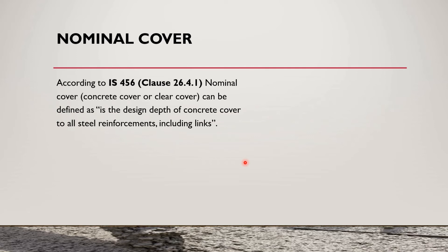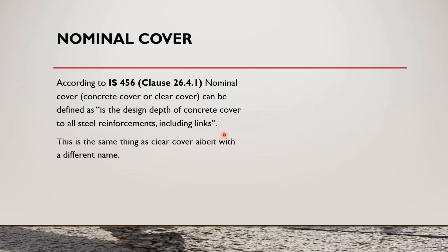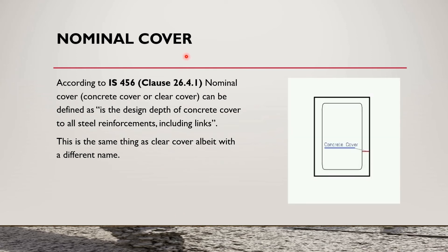Nominal cover. According to IS-456 clause 26.4.1, nominal cover can be defined as the distance depth of concrete cover to all steel reinforcement including links. Nominal cover is the same thing as clear cover, albeit with a different name. Nominal cover, concrete cover, or clear cover — these all things are the same. It is the distance from the face of the member to the outer surface of the steel.